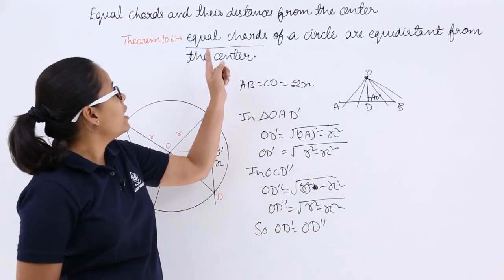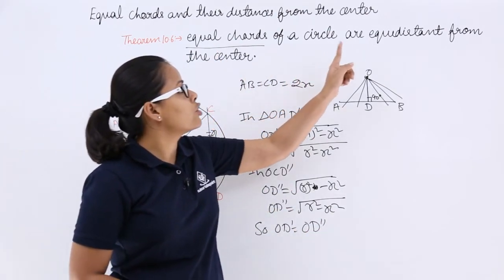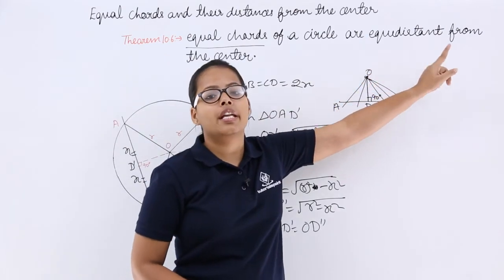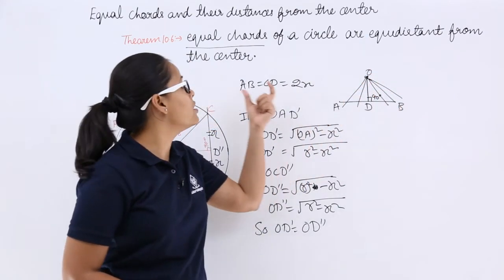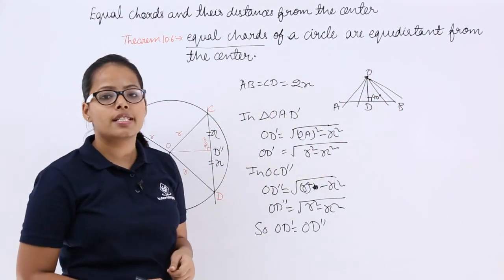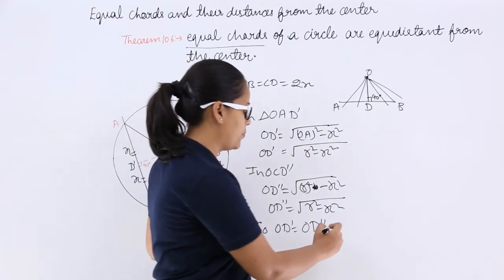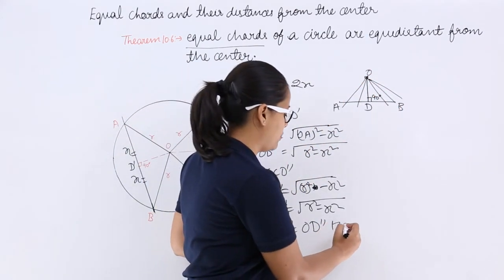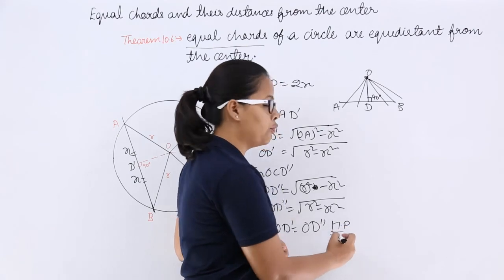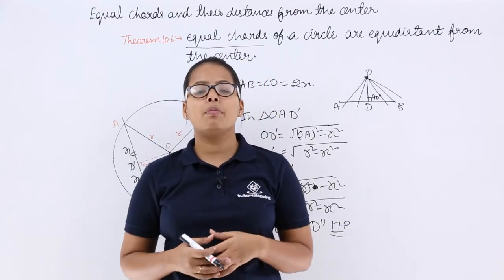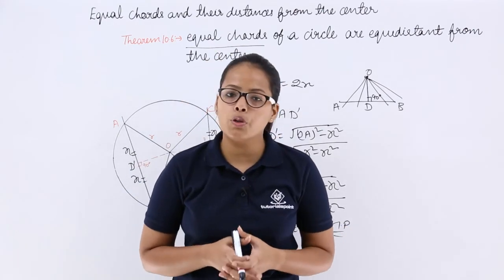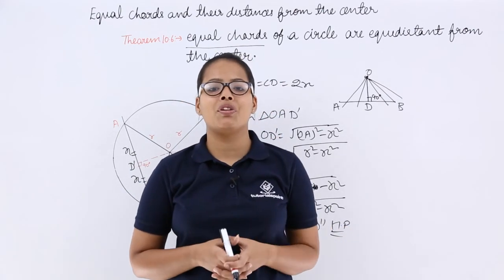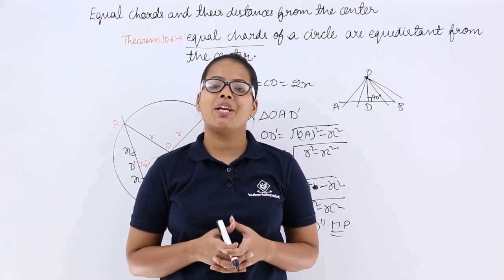Hence proved that equal chords of a circle are equidistant from the center. I will be taking one more theorem in the next video lecture. Thank you.